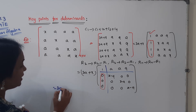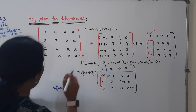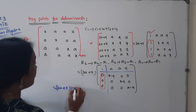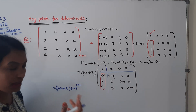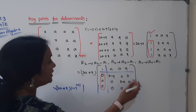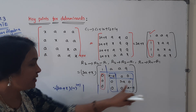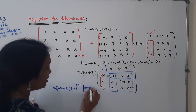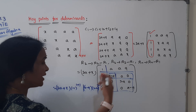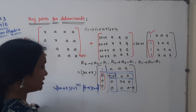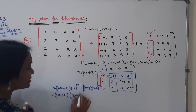Taking 3a plus x common, the first column is now 1, 0, 0, 0. We neglect the corresponding row and column. Expanding along the first row: minus 1 to the power of 1 plus 1 = 1. Using ad minus bc for the 3x3 remaining sub-matrix, the remaining terms are all 0 except x minus a whole squared.